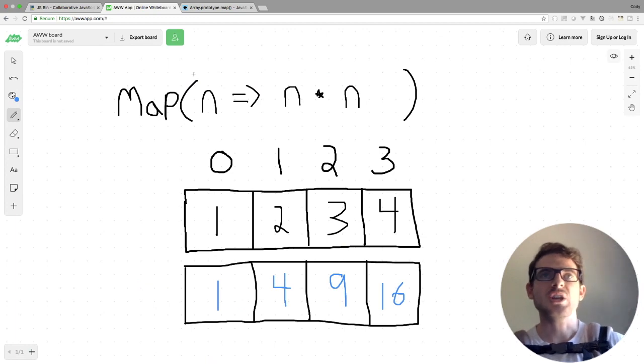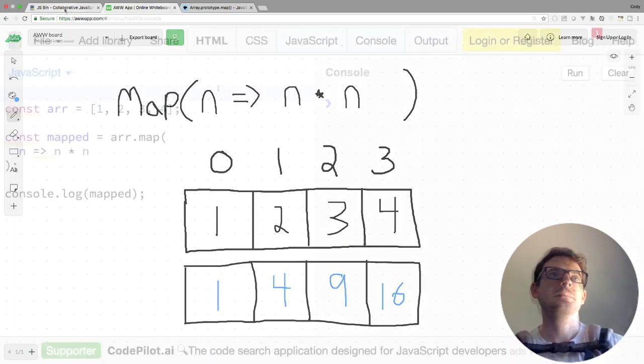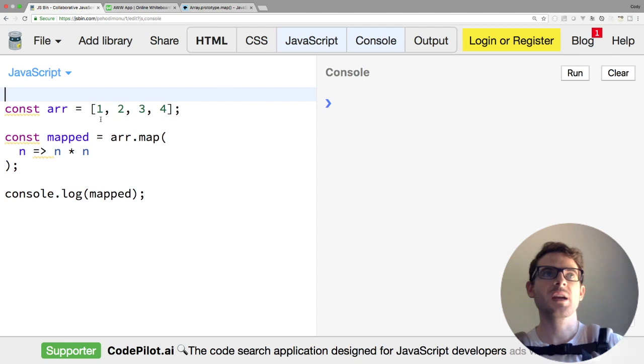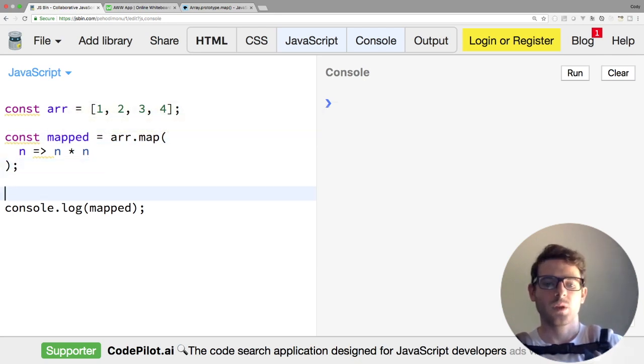And let's look at this in JS Bin with the same array. So if you look here, we have the same array one, two, three, four. We have our map function, which is our callback here: n fat arrow n times n. And then we're simply doing arr.map to get our new mapped array.